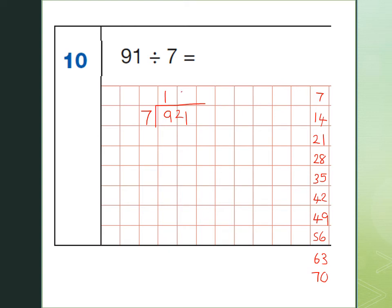Now, 7 goes into 21 three times, and it goes in exactly, so there's no remainder, so that's my answer, 13. So, 91 divided by 7 is 13.